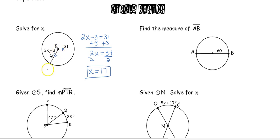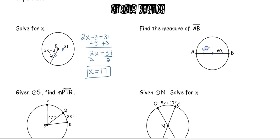The radius goes from the center of the circle to the outside. For our next problem, we want to find the measure of segment AB. A is on one side of the circle, B is on the other side, and it goes through the center. We can look at this as 2 radii meeting at the center. If one is 60, the other is also 60, giving us segment AB equals 120.